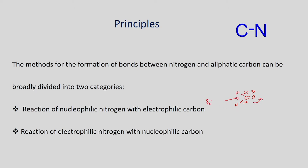For example, if you react with a secondary amine, it can lead to addition to give an amino alcohol as a product. It depends upon the substituent — if hydrogen is present, it can undergo elimination to give the Schiff base. On the other hand, if you have a secondary amine, you can get the aminoalkanol as the product.